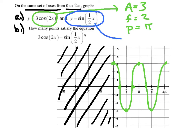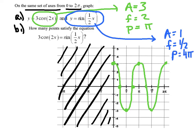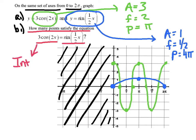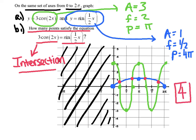For sin(x/2), the amplitude is 1, the frequency is 1/2, and the period is 4π — so I only see half the curve over 0 to 2π. The sine curve starts with a root, ends with a root, and has a max halfway between — a very subtle, gentle curve, concave down the entire time. As for part B — how many points satisfy the equation — all they're really asking is how many points of intersection there are. I count 4 intersection points, so the answer is a grand total of four points.